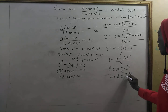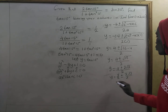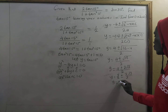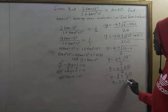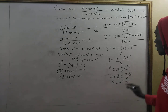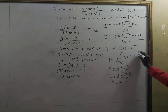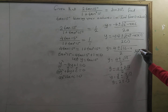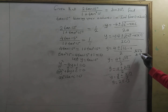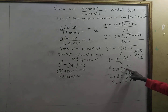Now root 12 is the same as root four times three, which equals two root three. So we have y equal to four plus or minus two root three, all divided by two, which simplifies to y equal to two plus or minus root three.